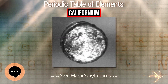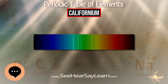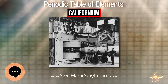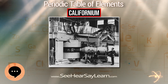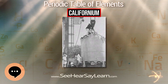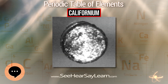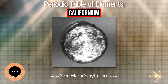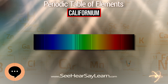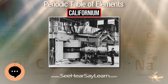The first experiment with californium in concentrated form occurred in 1958. The isotopes californium-249 to californium-252 were isolated that same year from a sample of plutonium-239 that had been irradiated with neutrons in a nuclear reactor for five years. In 1960, Burris Cunningham and James Wallman of the Lawrence Radiation Laboratory created the first californium compounds—californium trichloride, californium oxychloride, and californium oxide—by treating californium with steam and hydrochloric acid.